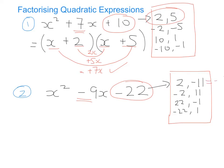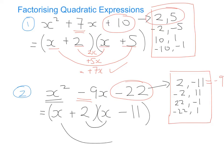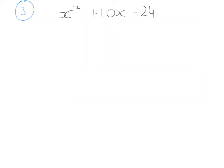2 plus -11 gives -9, so that's the correct pair. Draw our equal sign, double brackets, split x² into x and x, and fill in +2 and -11. Then do the smiley face check: 2 times x gives +2x, and x times -11 gives -11x. Adding 2x and -11x gives -9x, which matches our middle term.